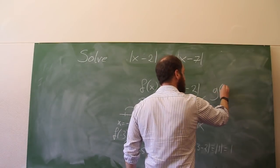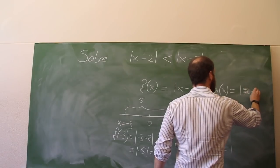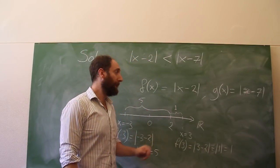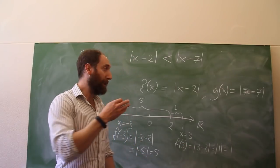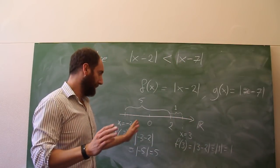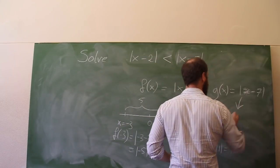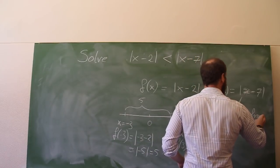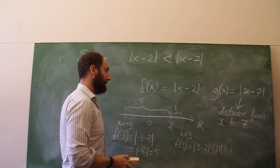Let's define a new function: g(x) equals the absolute value of x minus 7. The intuition is the same — this function g(x), given a value of x, tells you the distance from that point x to the point 7. And of course, it's always positive.